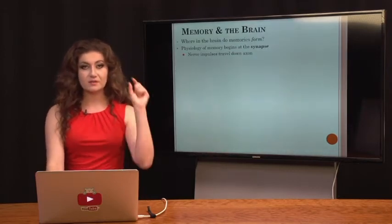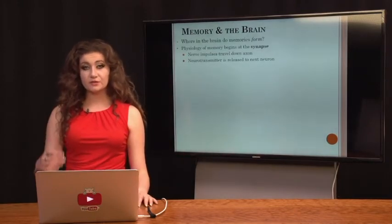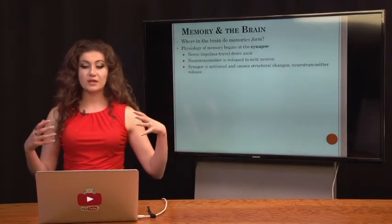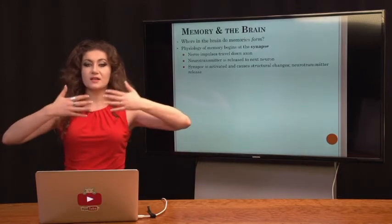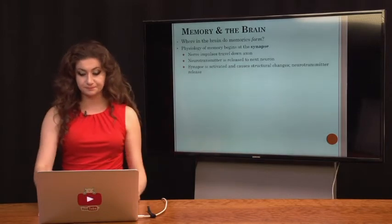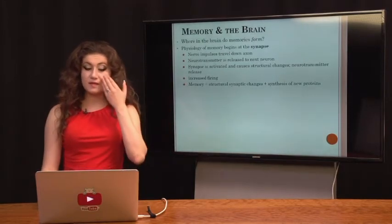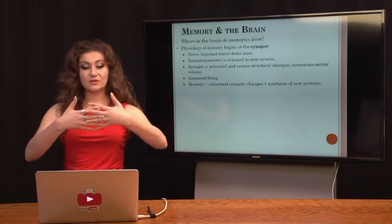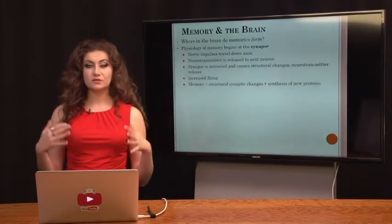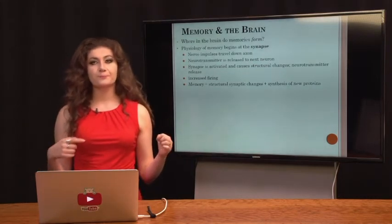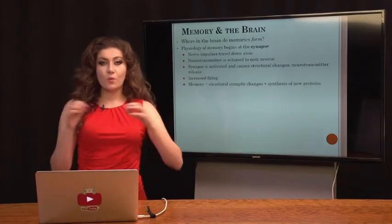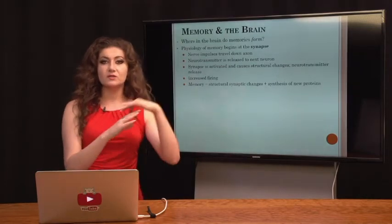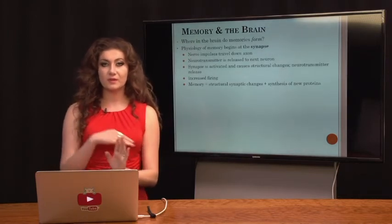After the neurotransmitter releases, there is a physiological change between the two neurons. A memory will occur when structural synaptic changes build new proteins and essentially connect the two neurons together. Information in our brain is stored in neural circuits — like webs connecting a variety of different neurons. Information is stored in these neurons and travels back and forth through these neural pathways and circuits.